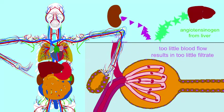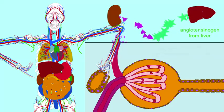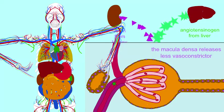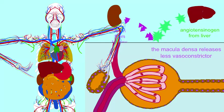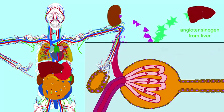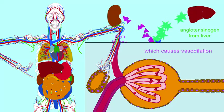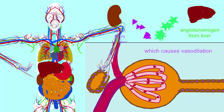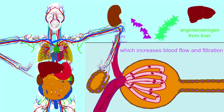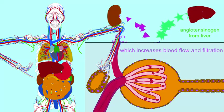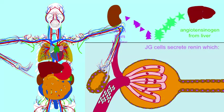Cells of the kidney known as the macula densa detect less salt when less blood is being filtered to form urine. And the sympathetic division of the ANS, with its baroreceptors, can also send input to these JG cells.